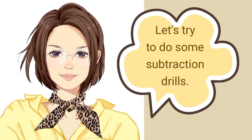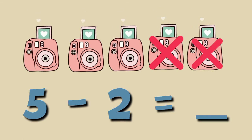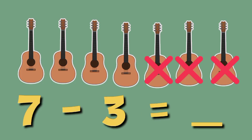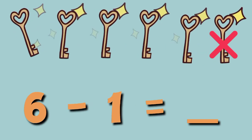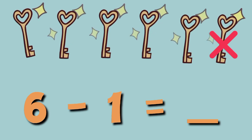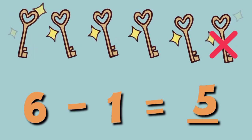Let's try to do some subtraction drills. Five minus two equals... three cameras. Seven minus three equals... four guitars. Six minus one equals... five keys.